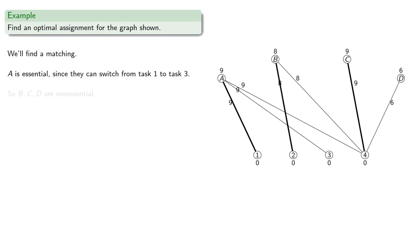So B, C, and D are non-essential. We'll decrease their weights by one and increase the weights of their adjacent vertices by one, and get a new equality graph.